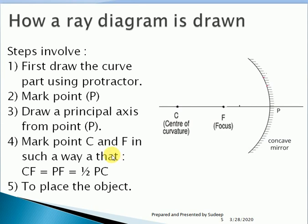In the last lecture I showed you how a ray diagram is drawn using a compass. In this lecture we will use a protractor to draw a ray diagram, as it saves a little time. Using a compass gives an exact center of curvature and a more accurate reading, but we can use a protractor as well — it saves time and will be helpful during examples.